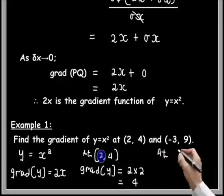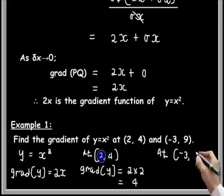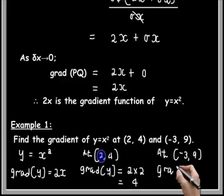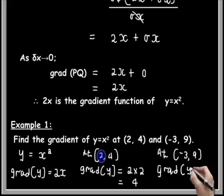Similarly, at the next point (-3, 9), grad y will be 2 times negative 3, and that is negative 6.